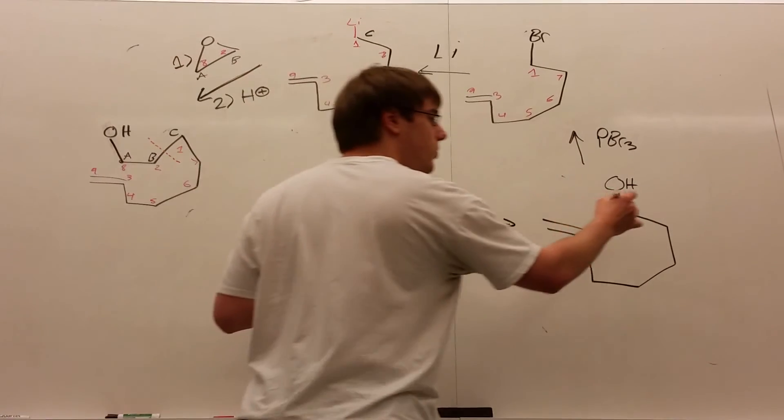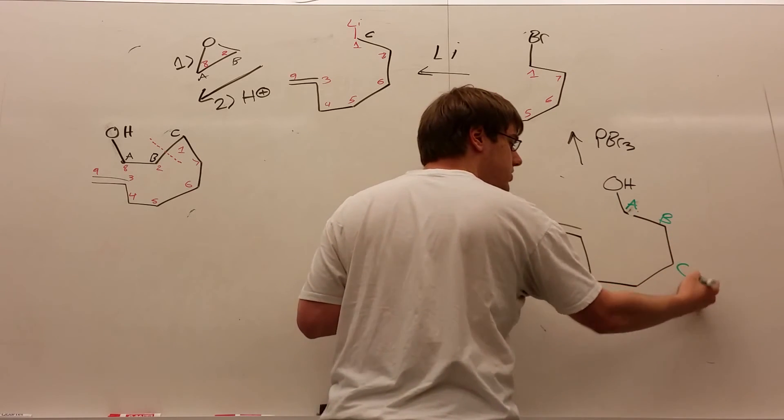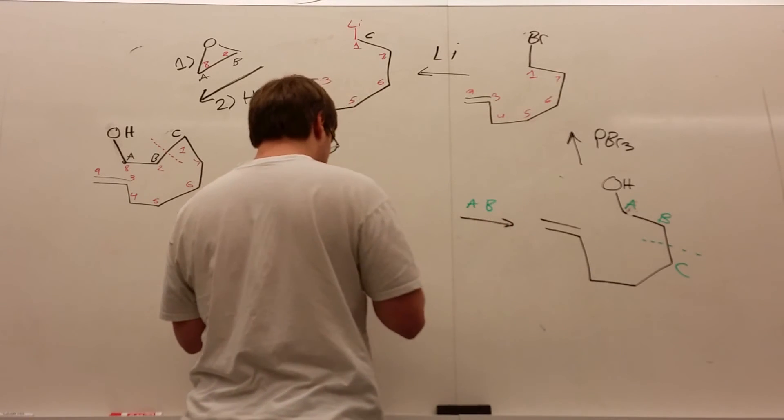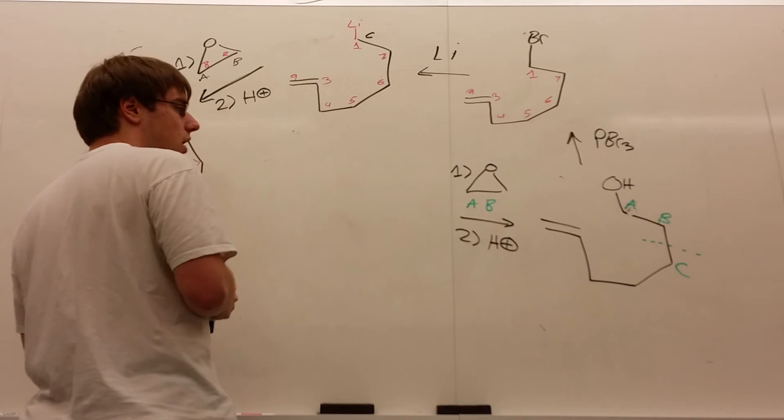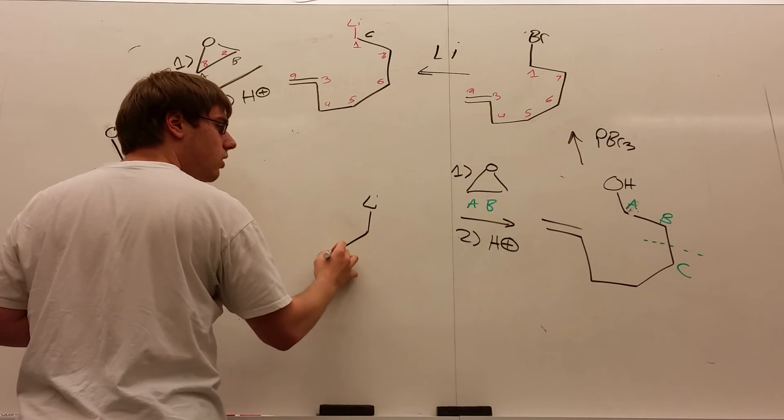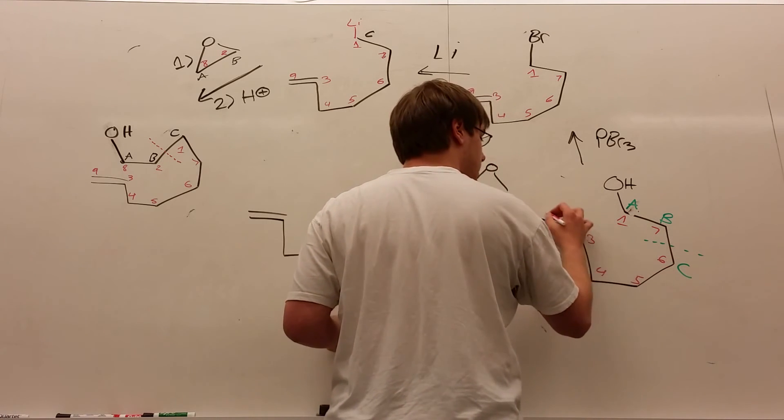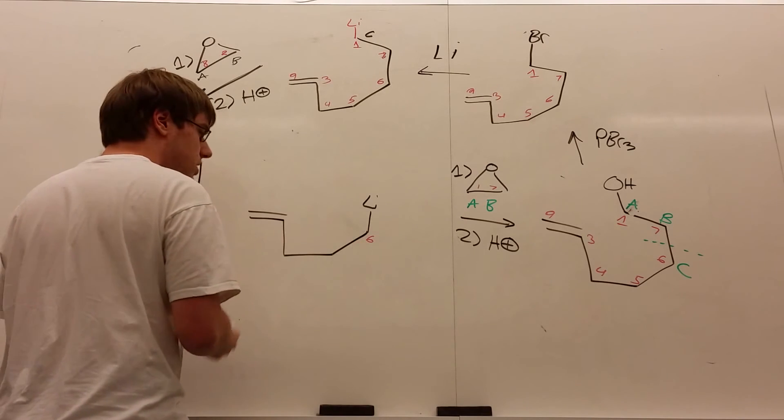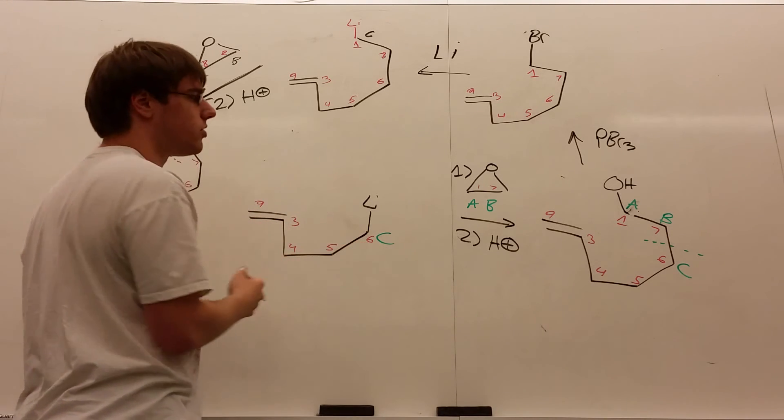So once again, you're going to label the carbon with the OH A. The next carbon over B, and then the third carbon over C. And epoxides allow you to cut between the bond of B and C. A and B will be the carbons of the epoxide. So you have 1, 2, oxygen, that's step 1. Step 2 is H+. And then on carbon C, on your reactant side, you should have a lithium. And now I have carbon 6, which was carbon C based on my lettering scheme, and then I have 5, 4, 3, and 9. And now I have 1, 2, 3, 4, 5 carbons. So I still have to cut a little more, unfortunately.